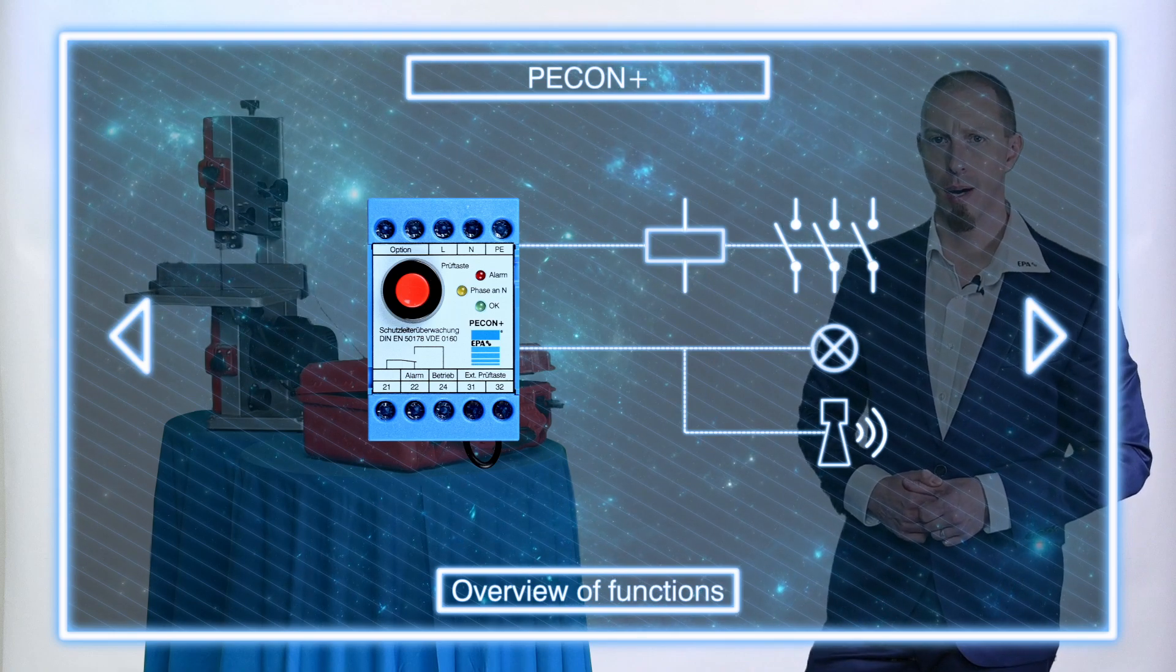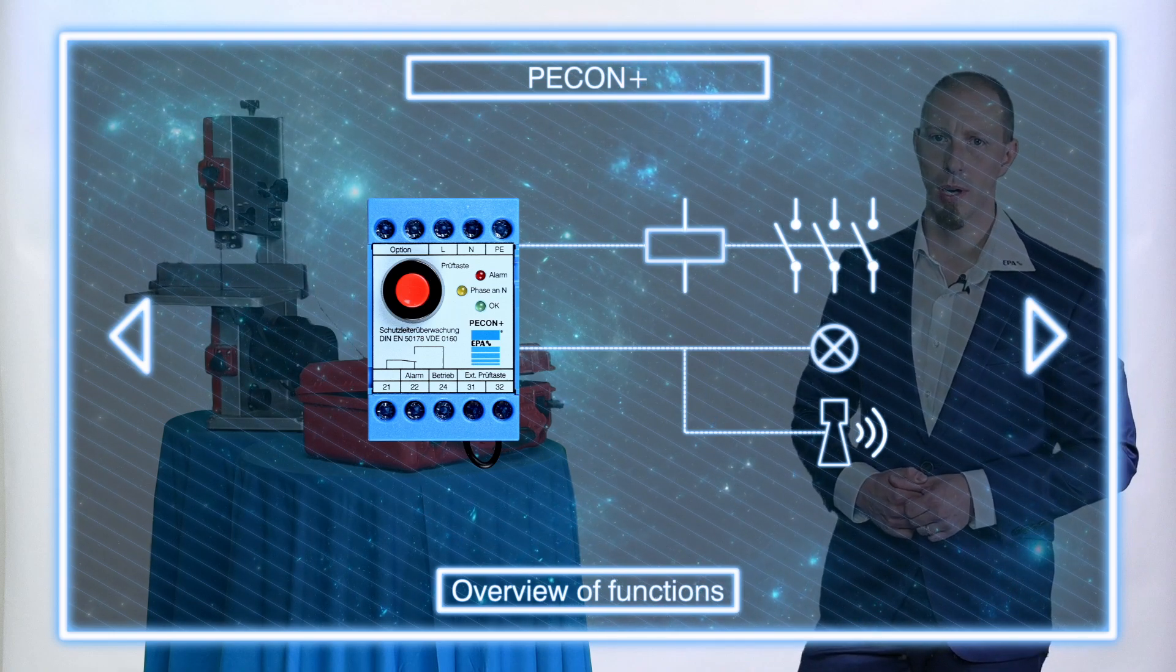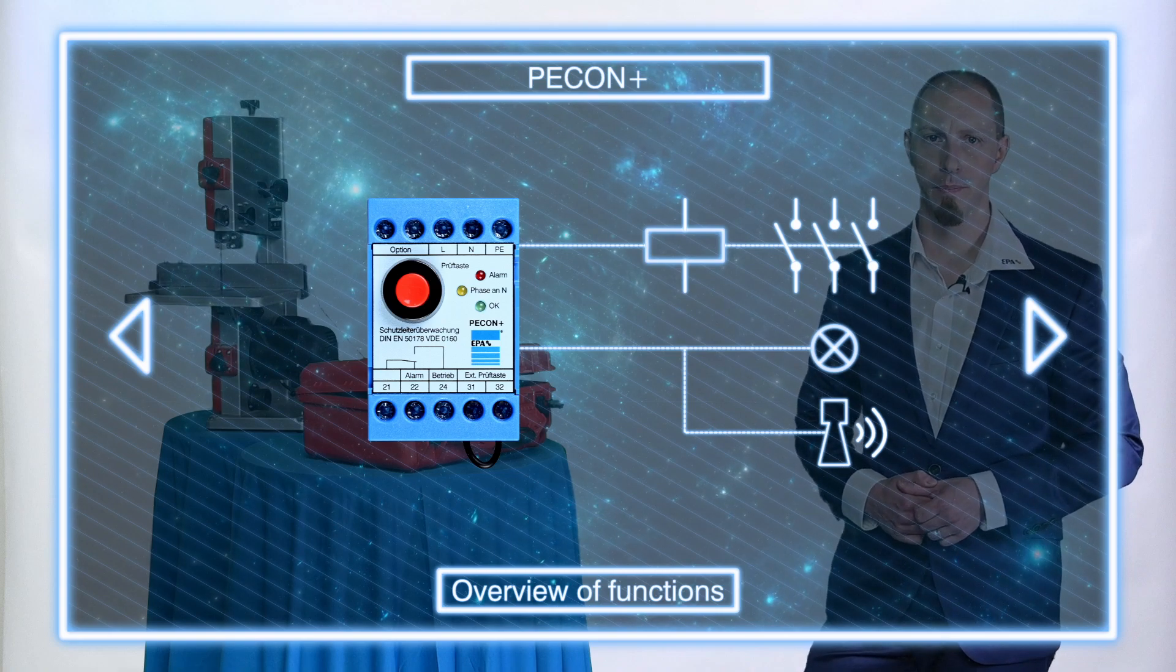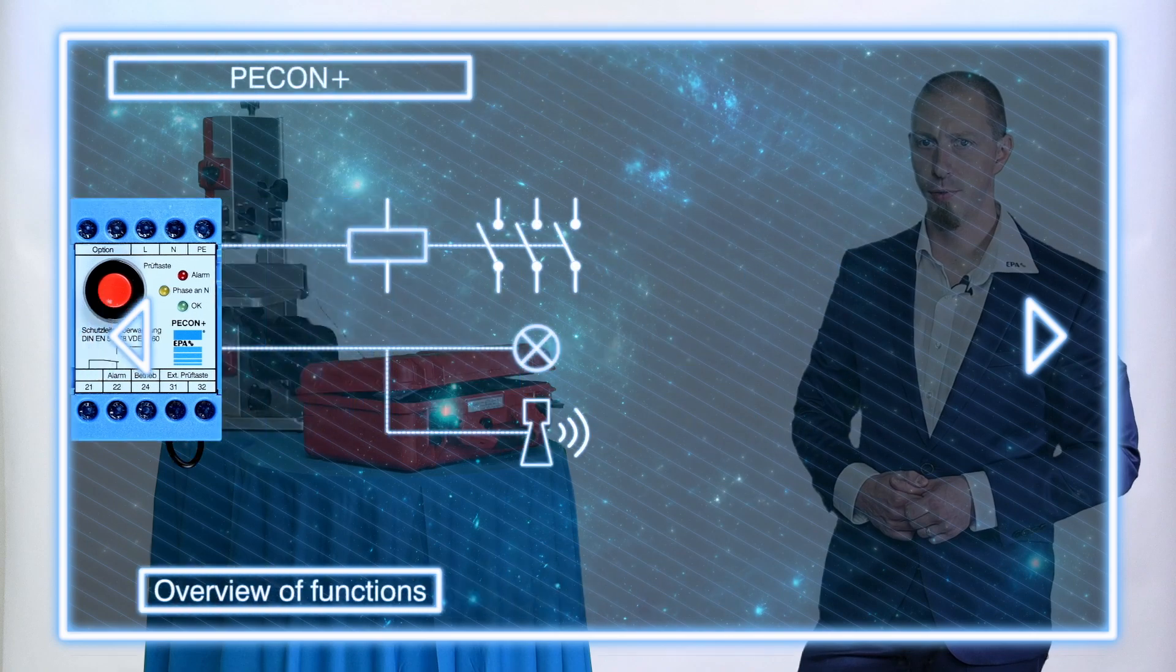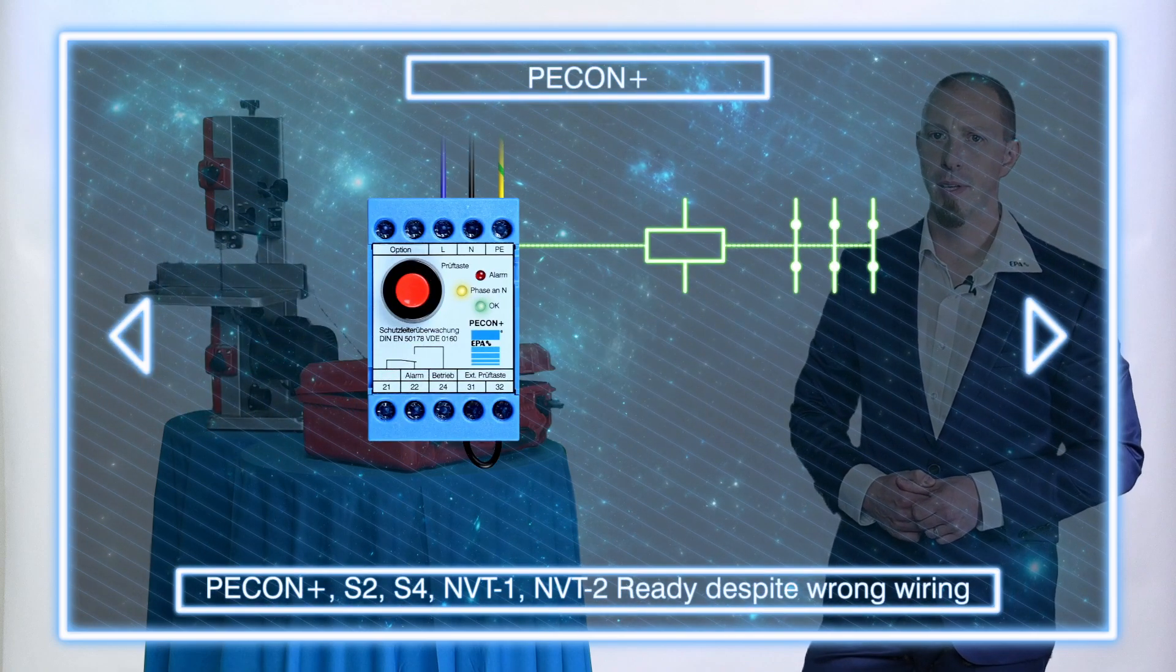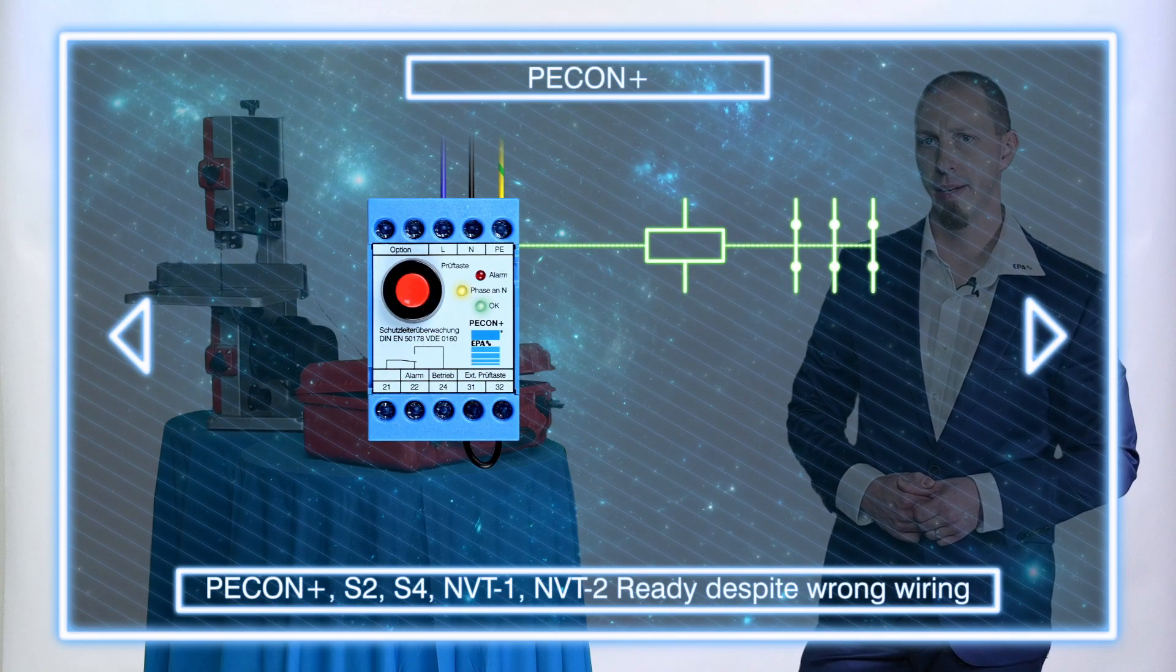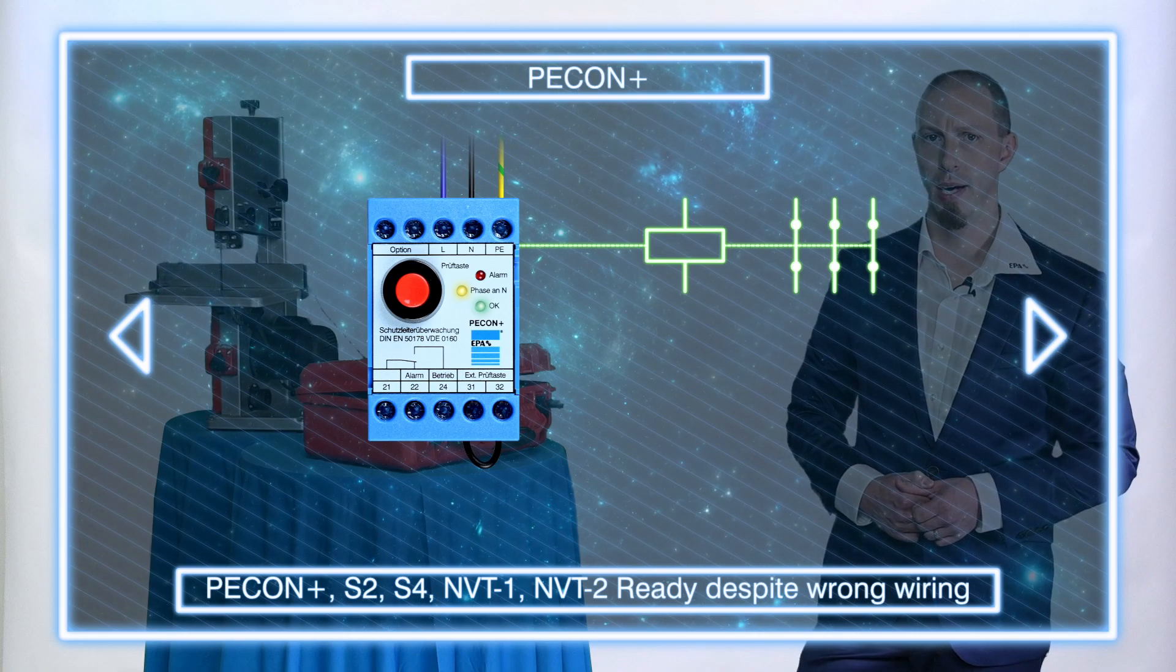For different applications, different models of the pecan plus are available. For example, the pecan plus, pecan plus S2, S4, NVT1, and NVT2 are ready for operation despite polarity reversal of L and N.